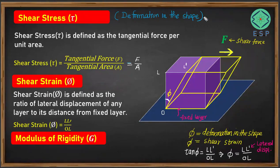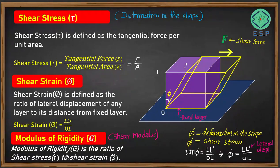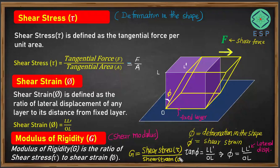For deformation in shape we have shear stress and shear strain. The ratio of shear stress to shear strain is called the modulus of rigidity or shear modulus G. So modulus of rigidity G equals shear stress divided by shear strain phi.